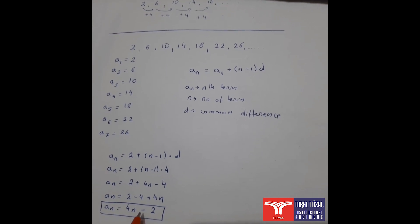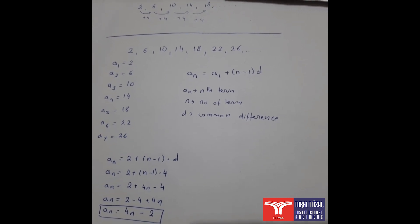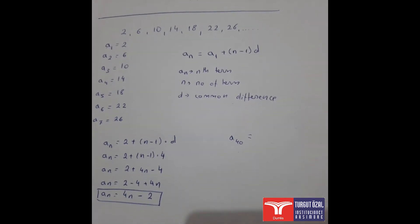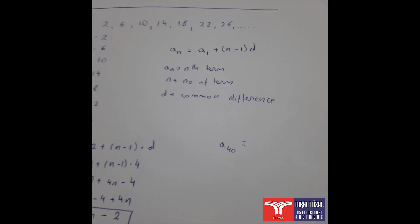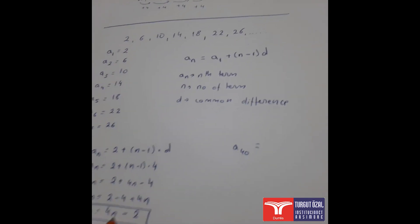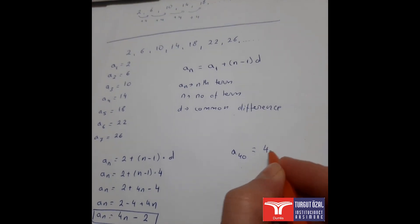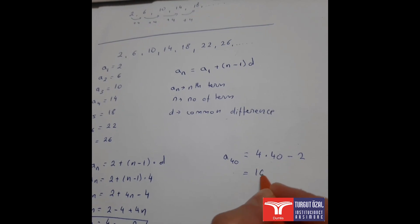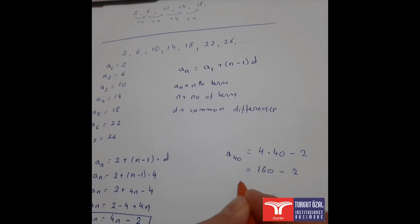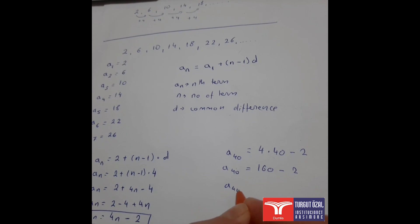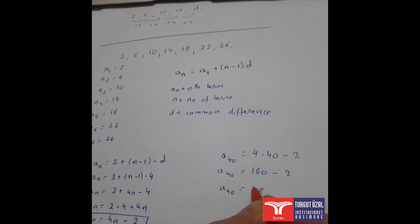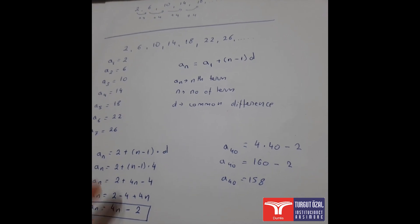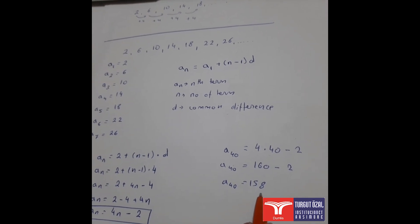Can we find the 40th term of this sequence? That means finding a40. If we know the general rule, of course we can — we substitute 40 for n: 4 × 40 − 2 = 160 − 2 = 158. So the 40th term of this sequence is 158.